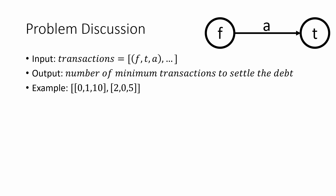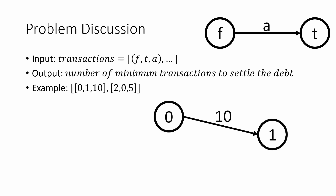Let's take an example. In the first tuple we get (0, 1, 10), which means from node 0 we are paying out 10 rupees to node 1. The second tuple says (2, 0, 5). In this case the answer is 2, and there is no possible way we can minimize these two transactions into perhaps one or zero transactions.